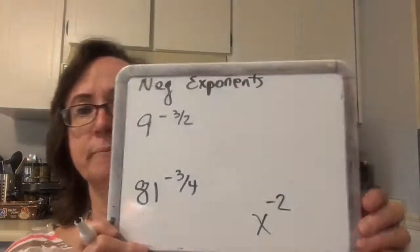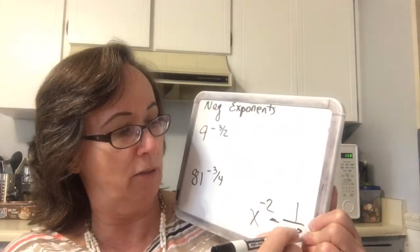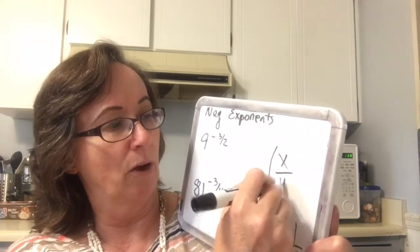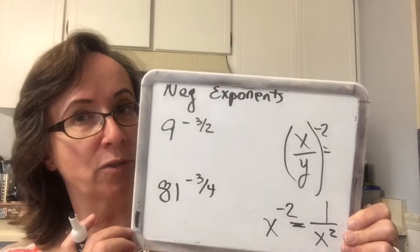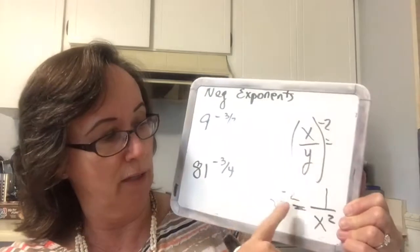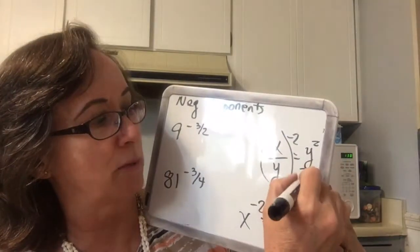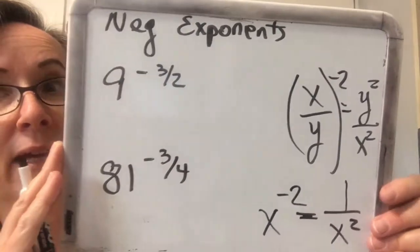Now we're going to begin talking about negative exponents. Remember, when dealing with negative exponents before, x to the negative 2 was the same thing as 1 over x squared. And if we had a fraction x over y to the negative 2, since the whole fraction was raised to the negative power, we would flip the whole thing over and get y squared on top and x squared on the bottom.